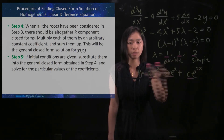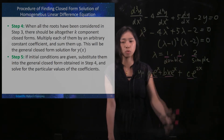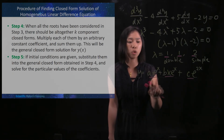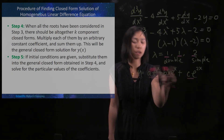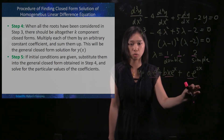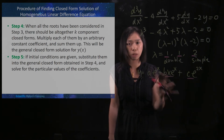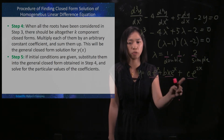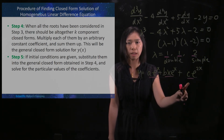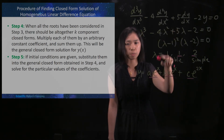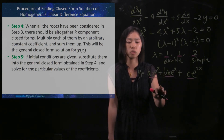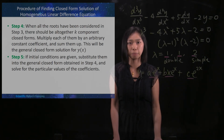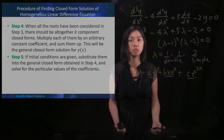This is the closed form solution, and it is a general solution. If you want to find your specific constants a, b, c, then you need to substitute the initial conditions to find a, b, c, and then you will get a particular solution.